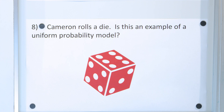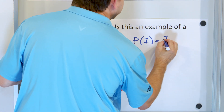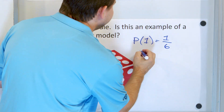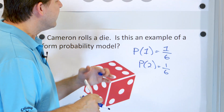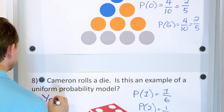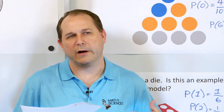Last question: Cameron rolls a die. Is this an example of a Uniform Probability Model? The probability of rolling a one is one sixth because only one side has a one, out of six total. The probability of rolling a two is also one sixth, and the probability of rolling three, four, five, or six is always one sixth as well. So yes, this is a Uniform Probability Model.